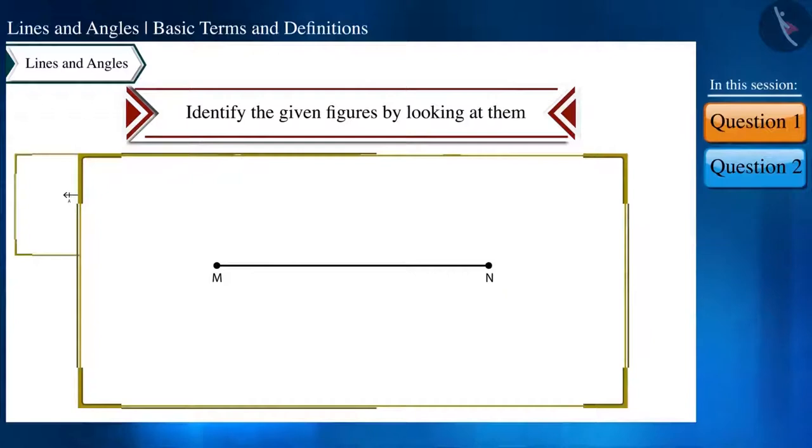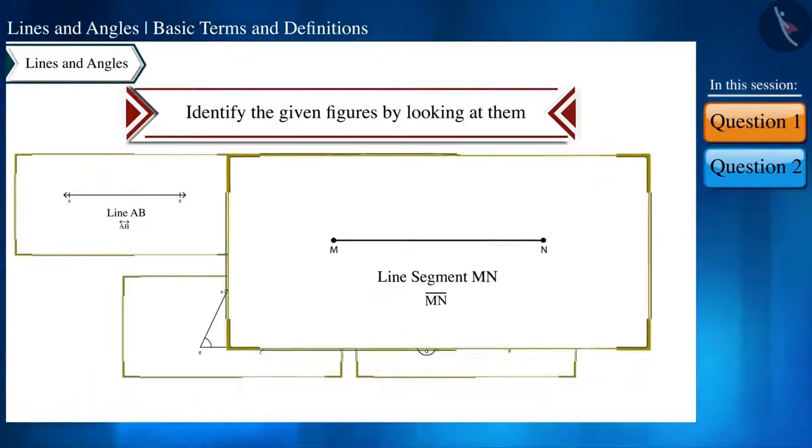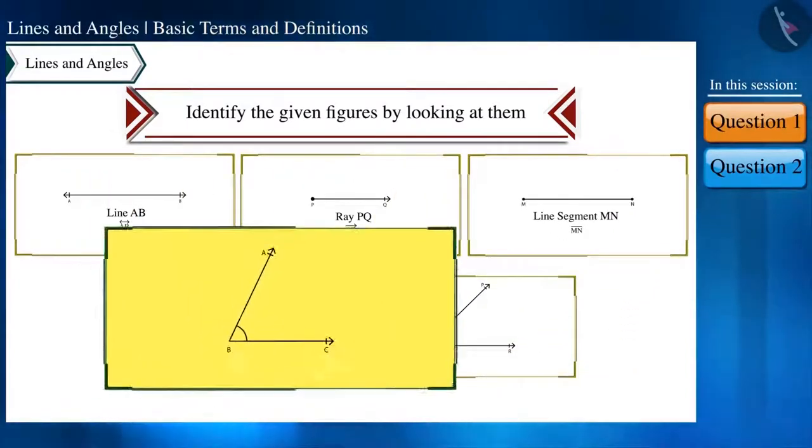In the third figure, here on both the ends, there is a point. This can be part of any line. So, we call it a line segment. This is line segment MN and we can represent it like this.